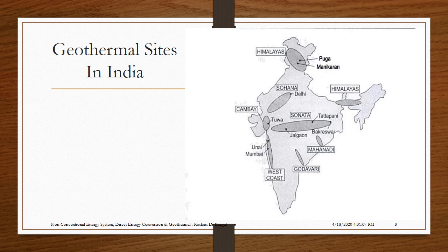The image shows the geothermal sites in India. These are located in the Himalayas, Sohana, Kambe, Sonata, the West Coast, Godavari, and Mahanadi.